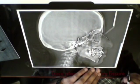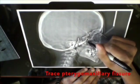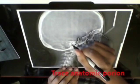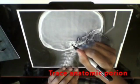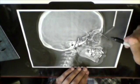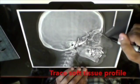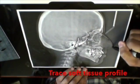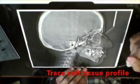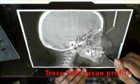You can trace the pteryomaxillary fissures which are just above the posterior nasal spine. Porion can be located posterior to the condyle and then you can trace the soft tissue profile next starting with the forehead, the nose, the upper lip and then the lower lip and chin area.